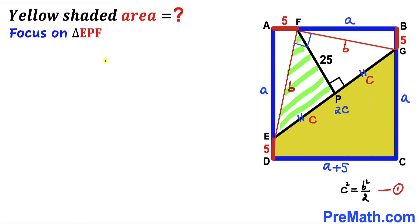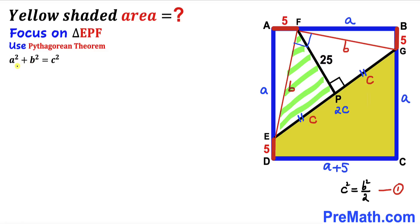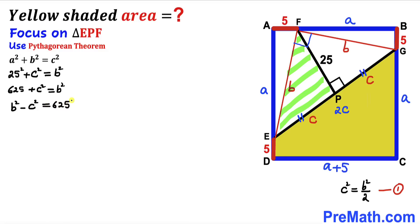Now let's focus on right triangle EFP and apply the Pythagorean theorem on this triangle as well. Our hypotenuse is lowercase b, and the two other side lengths are 25 and c. So we get: 25² + c² = b². Moving c² to the other side gives us b² - c² = 625.